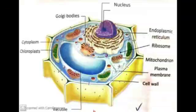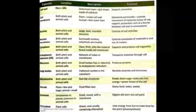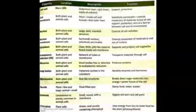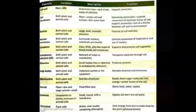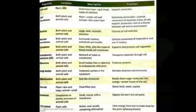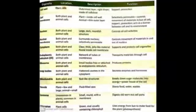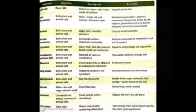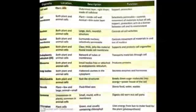Now if you look at the table given here, it is showing you all the parts of a cell — right from the cell membrane to the last organelle we have done. It shows the location of each organelle, whether it is present in a plant cell or animal cell, and the basic functions of each organelle.